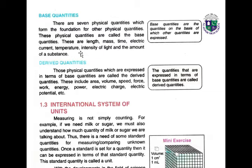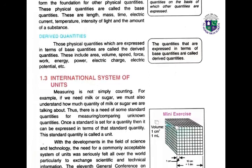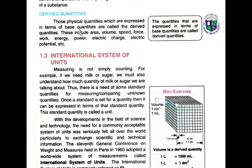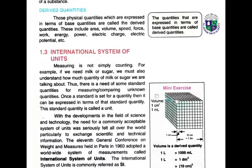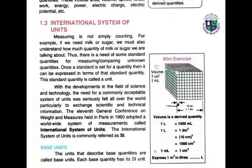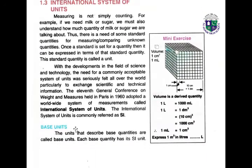The seven base quantities are: length, mass, time, electric current, temperature, intensity of light, and amount of substance. Derived quantities are those quantities which are expressed in terms of base quantities. For example, volume, speed, force, work, energy, power, electric charge, and electric potential are all derived quantities because they can be derived from the base quantities.